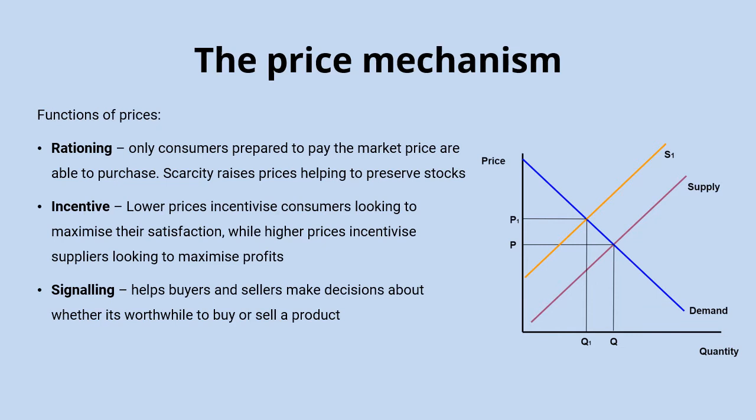We can see these forces at work in the diagram. If there was a shift in the supply curve — for example, producers' costs of production increase, causing supply to shift to the left — we'll start to see these functions of prices and how they work to allocate resources. The rationing function comes into play because if the price stayed the same there would be a shortage, and the increase in price causes a contraction along the demand curve, reducing the quantity demanded and addressing that shortage.